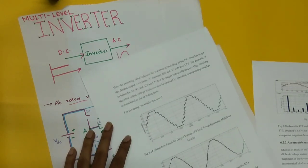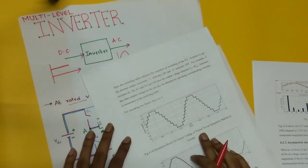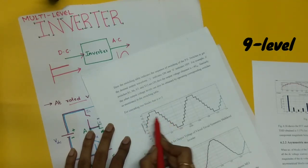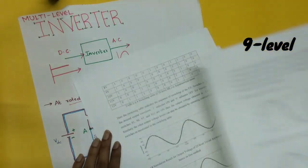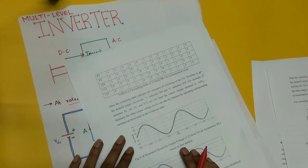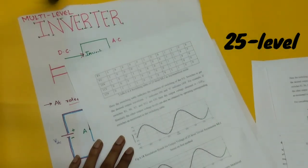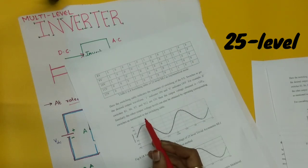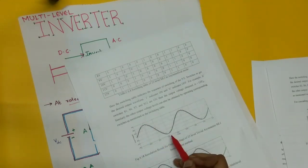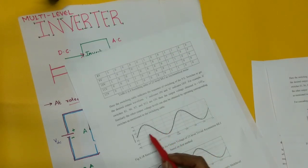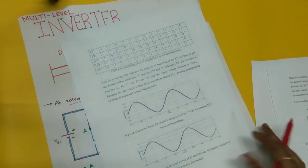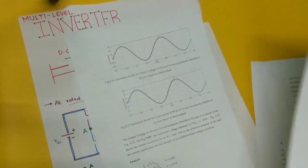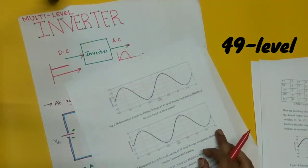Here is a nine-level inverter — it has nine levels total including positive and negative. This is a 25-level multilevel inverter, where the positive maximum is plus 12 VDC and the negative maximum is minus 12 VDC, giving 25 levels altogether. You can observe that as we go to higher levels, the obtained waveform is almost nearer to the desired sinusoidal waveform.